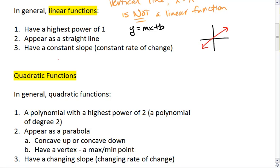Linear equations do appear as a straight line. And they have a constant slope or a constant rate of change, which is why they appear as a straight line.